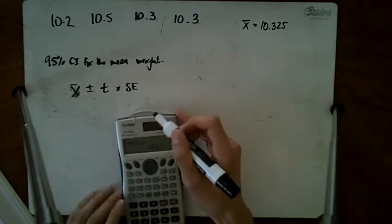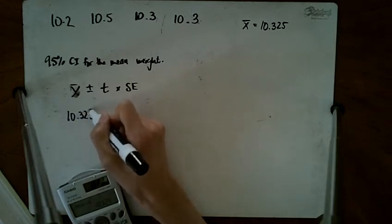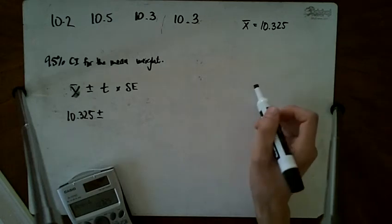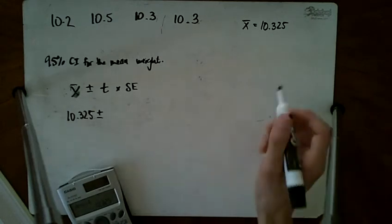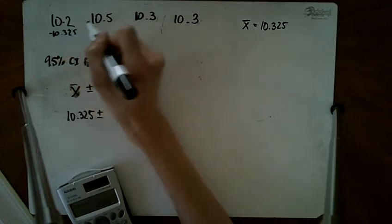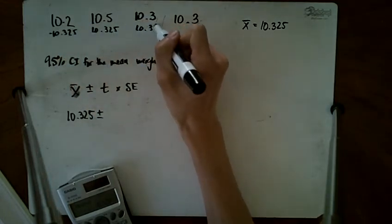That goes right here: 10.325, and then I still have plus or minus t times the standard error. To find the standard deviation, I subtract 10.325 from each value and square all these numbers.